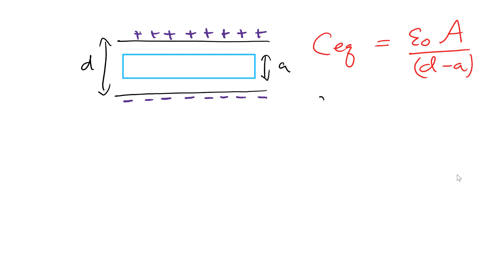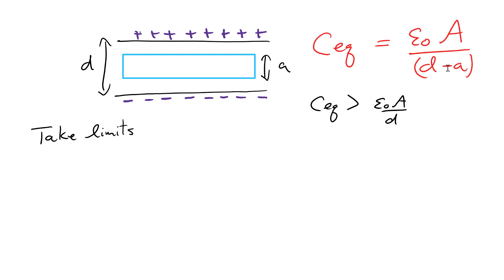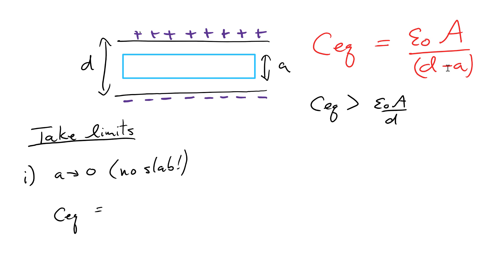The first thing we notice is that C_eq is bigger than the original capacitance, because we're dividing by (D minus A) which is smaller than D. Taking limits is a great way of checking your result. If A tends toward zero — meaning there's no slab — the expression gives C_eq = ε₀A/D, which is exactly the initial capacitance we started with. That makes sense: if there is no slab, we should just recover the original capacitance.